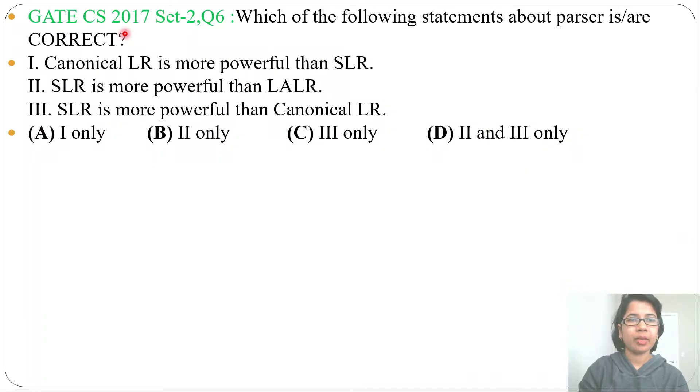Hi, let's solve a previous question on parsing. This question was asked in GATE CS 2017 Set 2, Question Number 6. Which of the following statements about parsers is or are correct? Three statements are given and four options are given. Let's analyze each statement one by one.